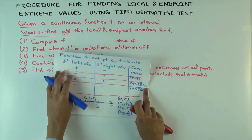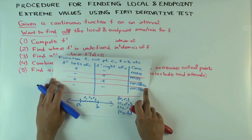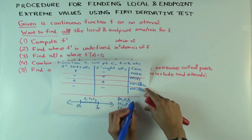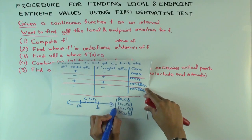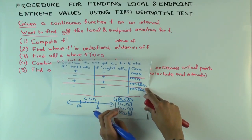The reason the sign is constant is a little tricky. F prime doesn't have to be continuous — there are some weird counterexamples where the derivative is not continuous — but it still satisfies what's called the intermediate value property. This means it cannot jump from positive to negative without either going through zero or becoming undefined in between. So on each of these intervals, F prime has a constant sign — it's either completely positive or completely negative. Your goal is to figure out, for each interval, what the sign is.